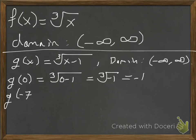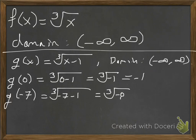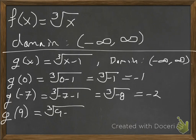If we find g of negative 7, that's the cube root of negative 7 minus 1, which is the cube root of negative 8, which equals negative 2, since negative 2 times negative 2 times negative 2 is negative 8. And g of 9 is the cube root of 9 minus 1, which is the cube root of 8, which equals 2, since 2 times 2 times 2 is 8. That covers evaluating a cube root function.